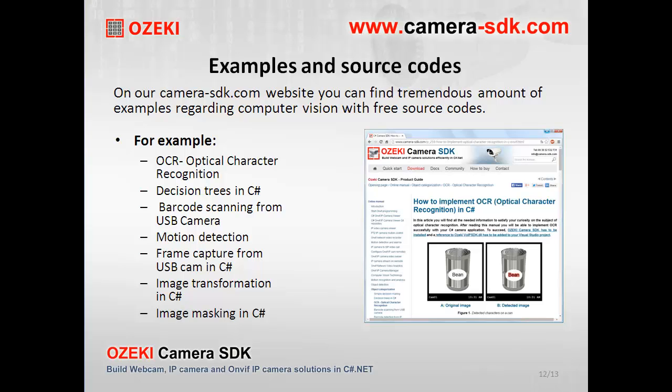Since this Camera SDK is ONVIF compliant, really easy to use, and an all-purpose tool, it is simple to implement computer vision solutions with this software. You can find different guides, examples, and free source codes on our website for many features, for example, optical character recognition, decision trees in C-Sharp, barcode scanning from USB camera, motion detection, frame capture from USB camera in C-Sharp, image transformation in C-Sharp, and image masking in C-Sharp.